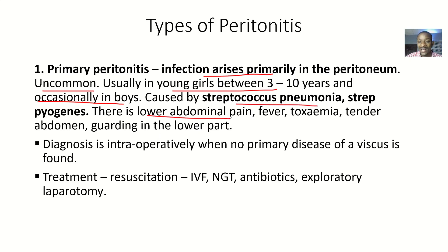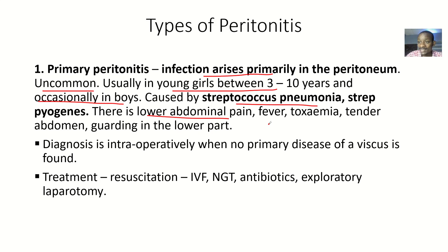Symptoms include lower abdominal pain, fever, and toxemia — that is, the presence of toxins in the blood. There is also a tender abdomen and muscle guarding in the lower parts. When you touch the area, the muscles will seem very tense.